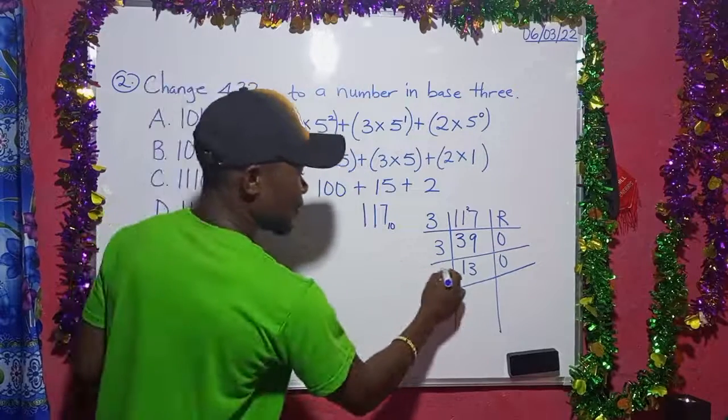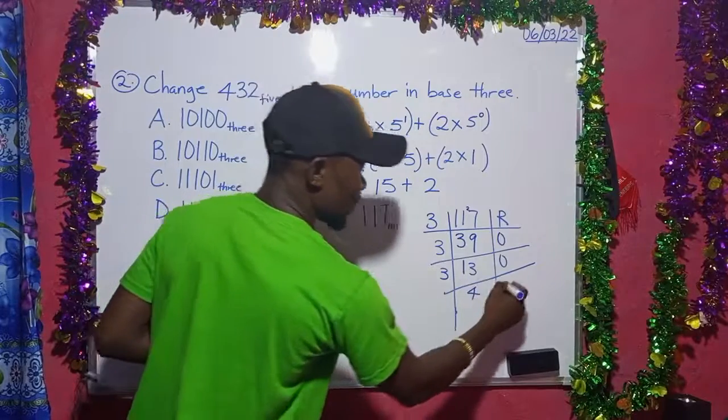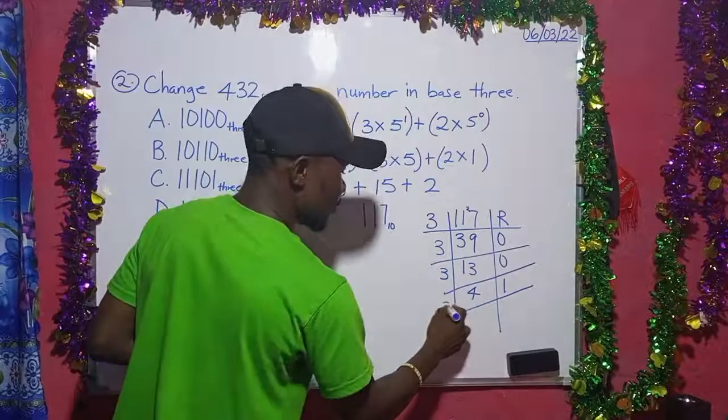The next thing, we bring this 3 here. 3 into 13 is 4 times. 4 times 3 is 12. 13 minus 12 gives us 1.